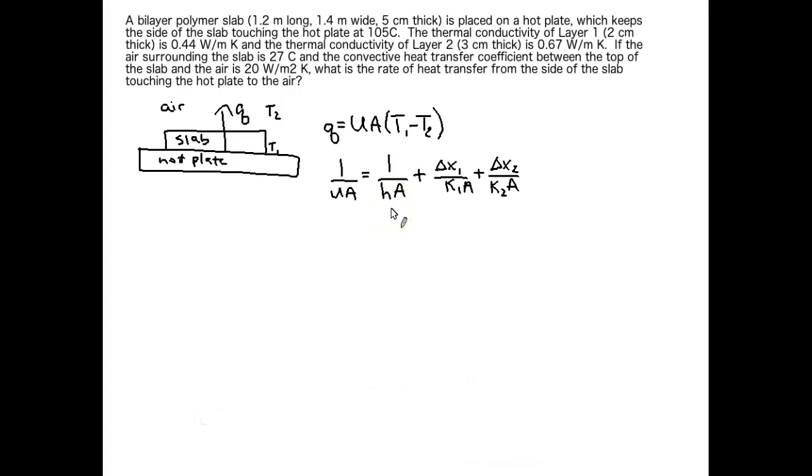One thing I want to point out here is because we have a slab, we have constant area that we're transferring heat through. And this is nice because now we just multiply the entire equation by area and all these A's will go away. So let's see what that looks like.